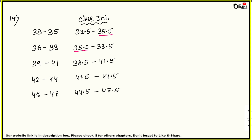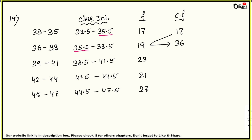Now write the frequencies: 17, 19, 23, 21, 27 (as given in the book). Calculate cumulative frequency: 17, then 17+19=36, then 36+23=59, then 59+21=80, then 80+27=107. So n = 107, which is odd. However, when class intervals are given, even/odd doesn't matter — the same formula applies regardless.